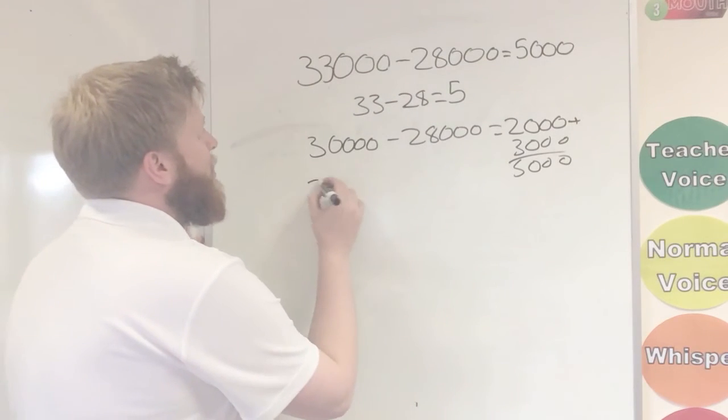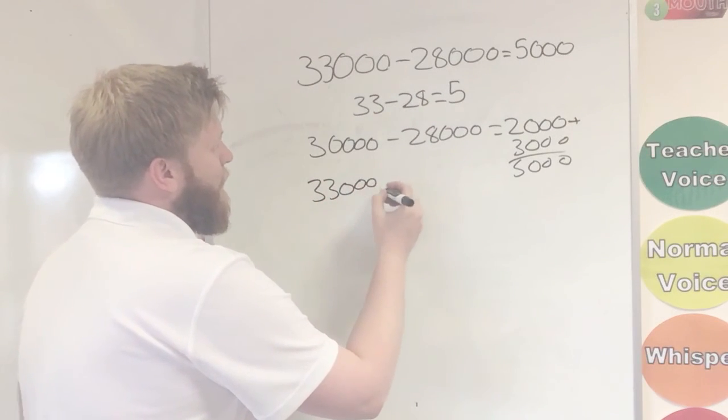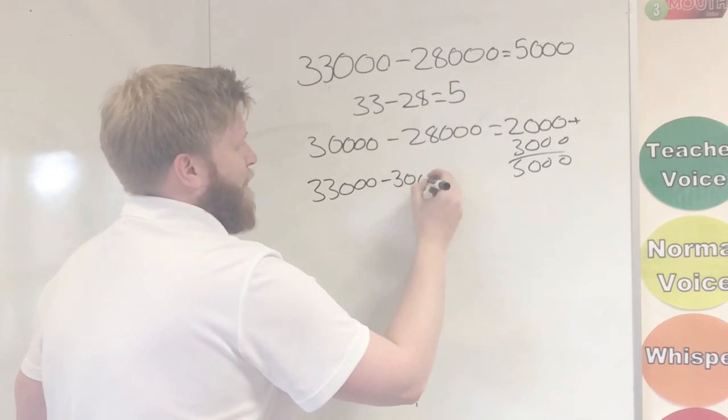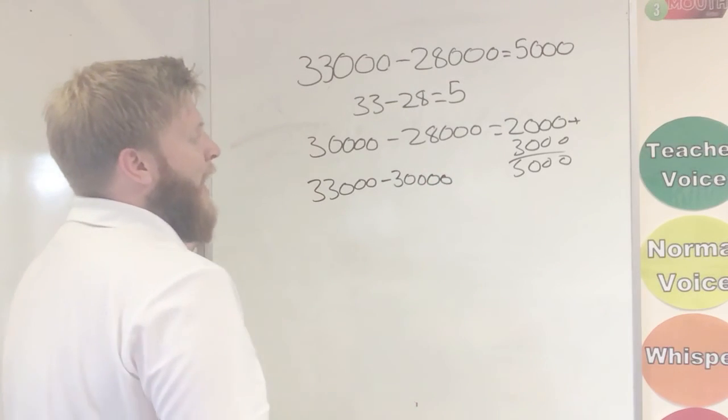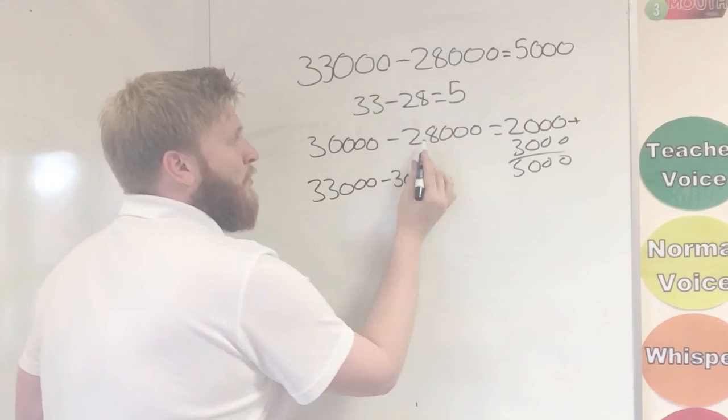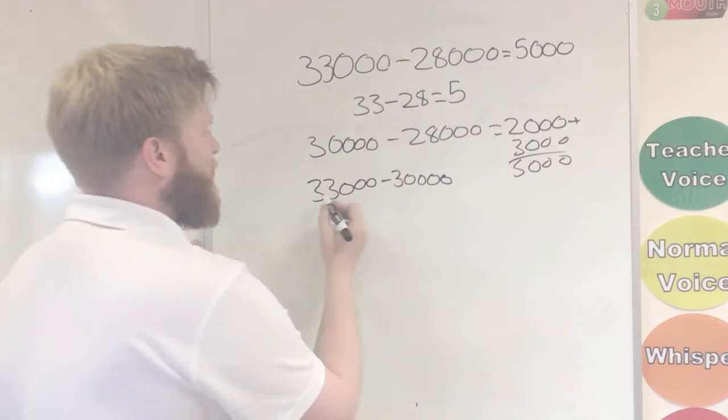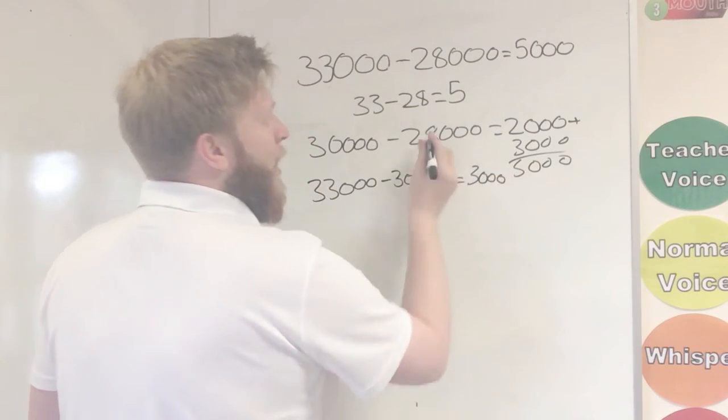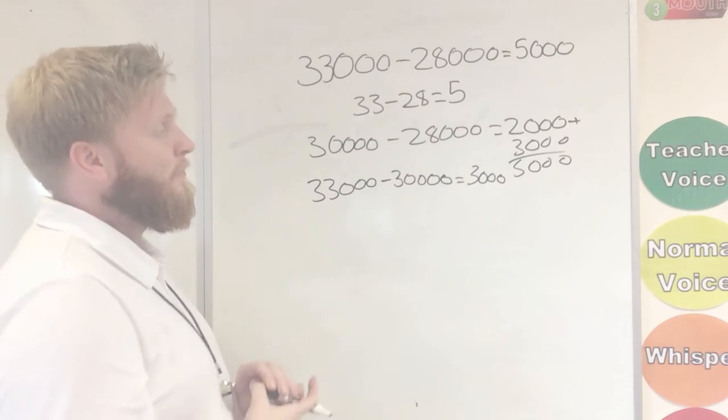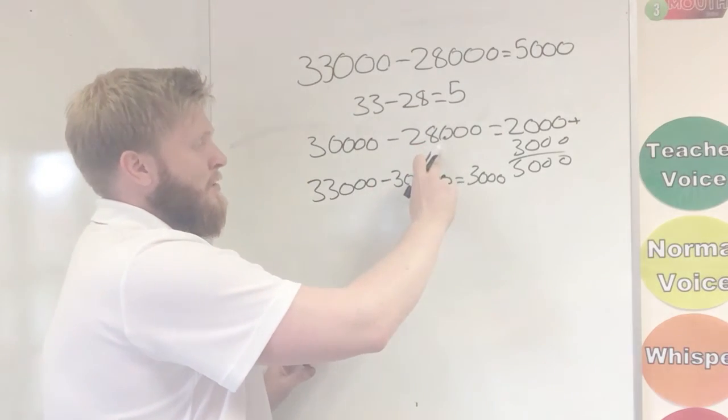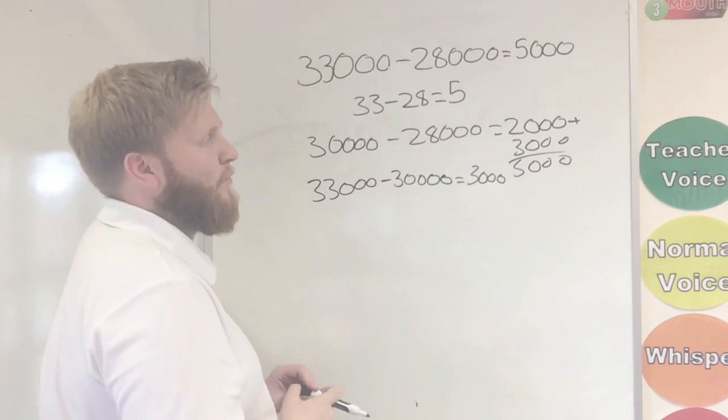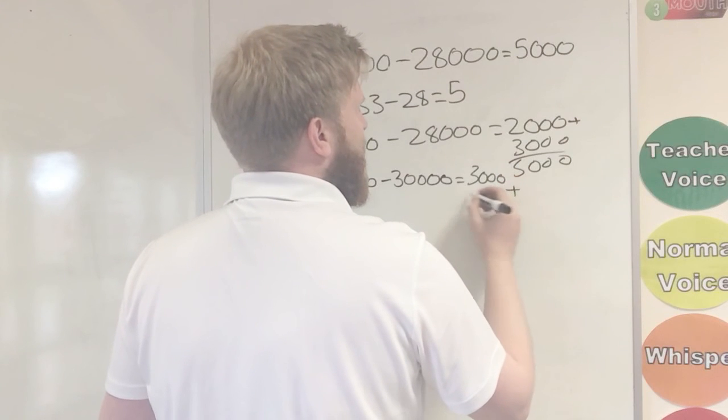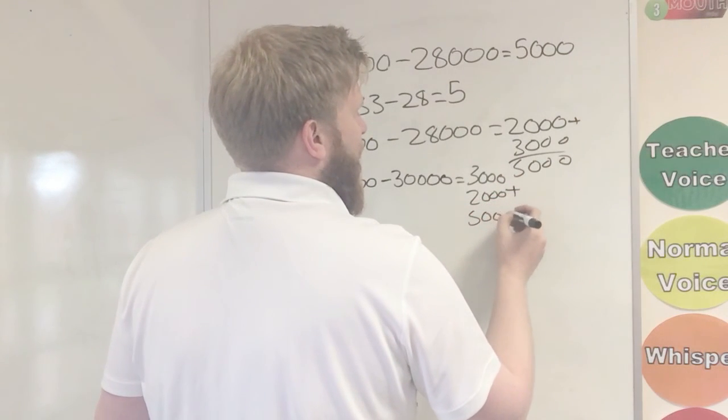So now, same again. Keep this as 33,000. And we're going to take away this time. Move this up to 30,000. And as you can see there, I've had to add on 2,000 to that. So I don't know if I've added 2,000 on. Do that sum. It's easy. We get 3,000 as our answer. We added 2,000 on to here, which means from our answer, we have to add that on as well. 3,000 plus our 2,000 equals 5,000.